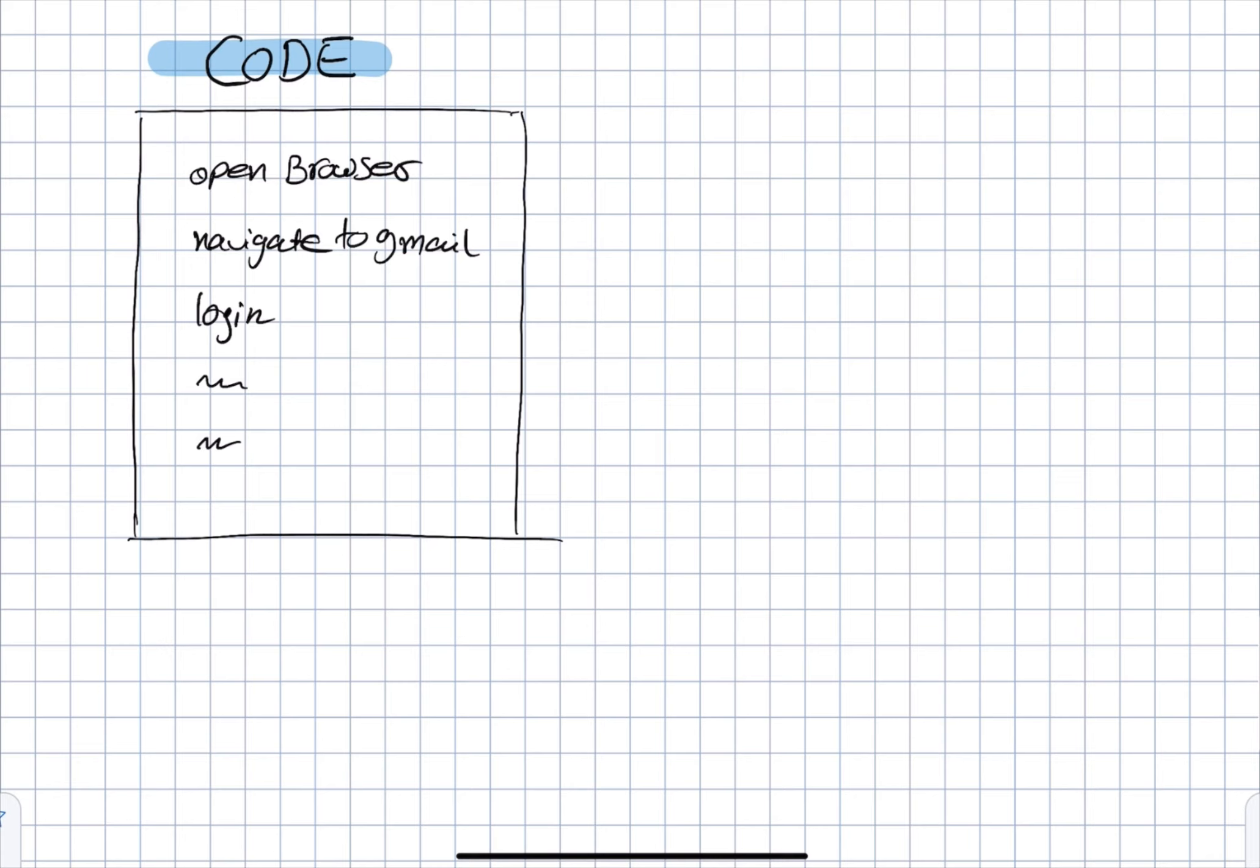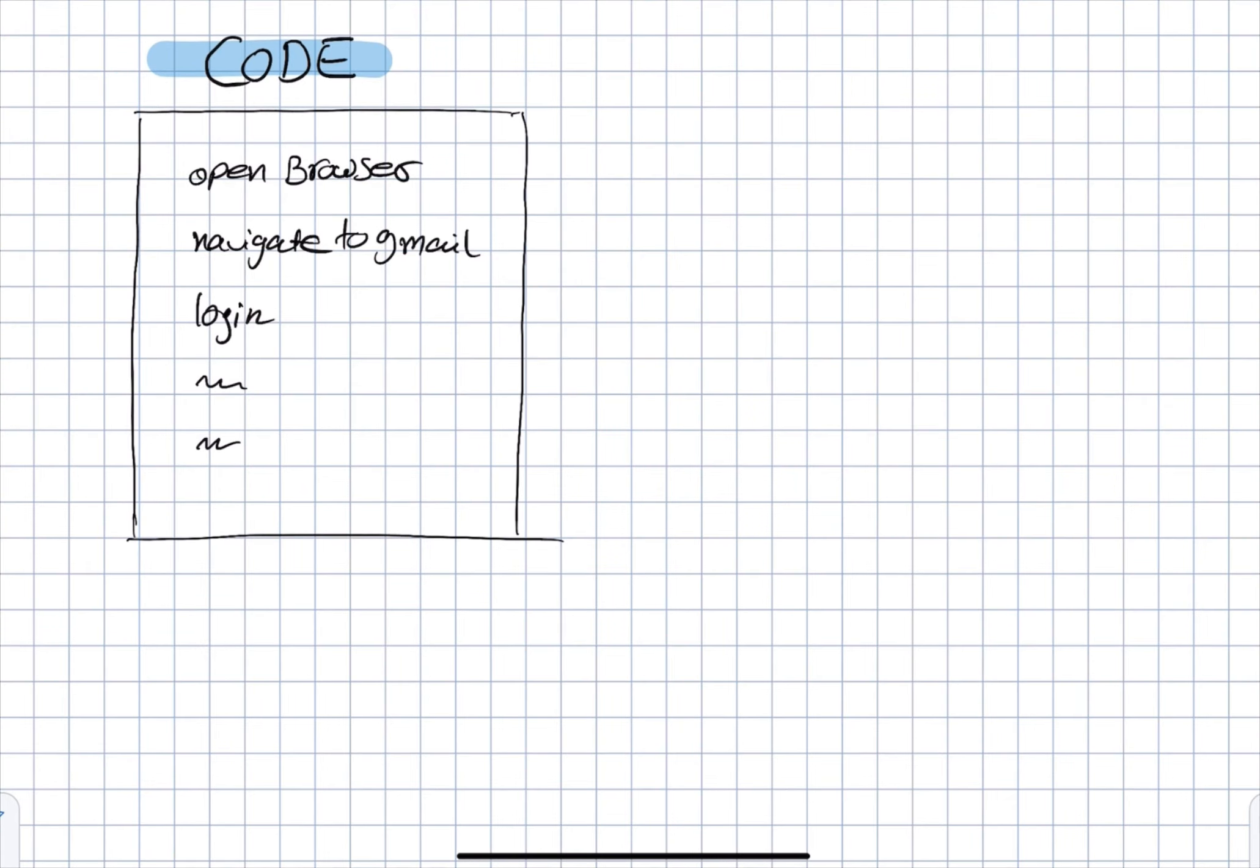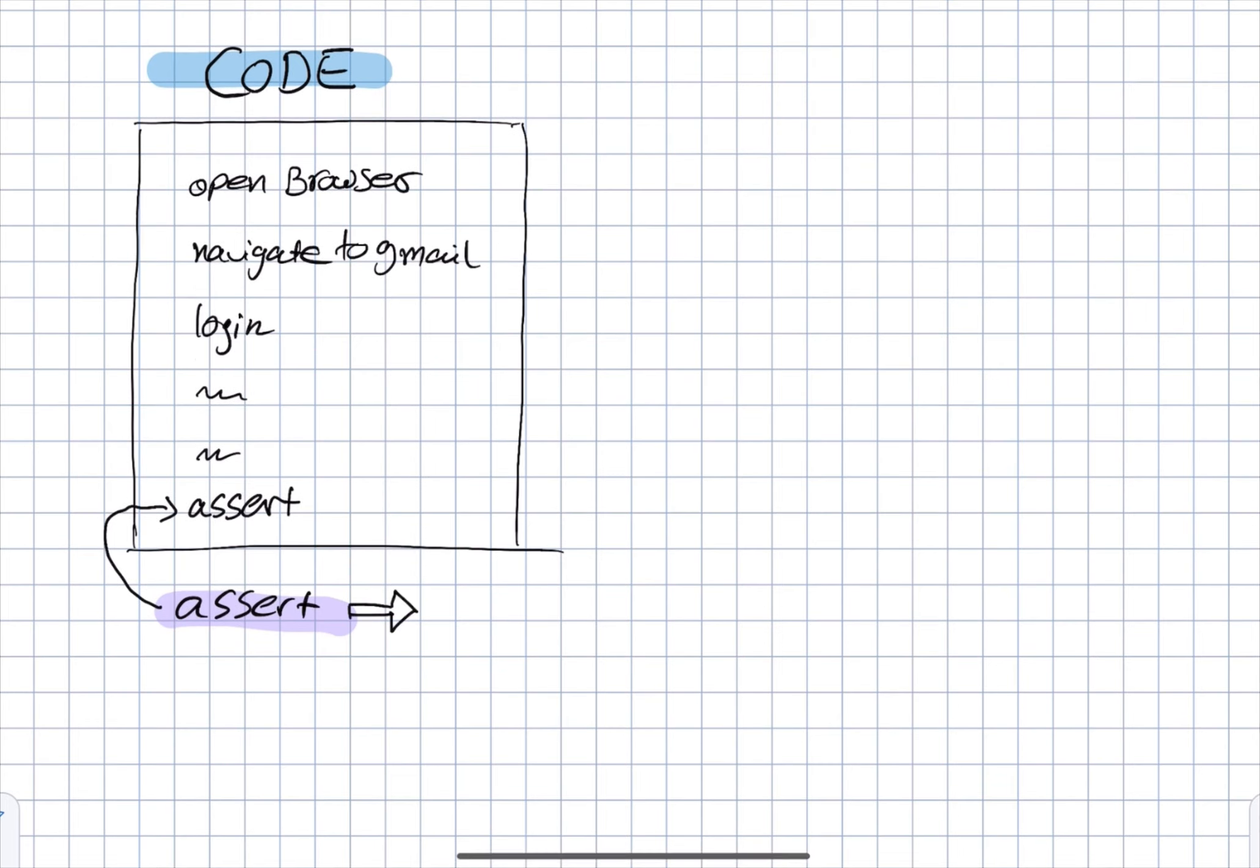First of all, a testing framework provides us with two possible benefits. The first one is the ability to add asserts. We can add the asserts in any line of code. In this example, we're adding it in the end of the test. In that way, we give the opportunity to the test to fail or pass.